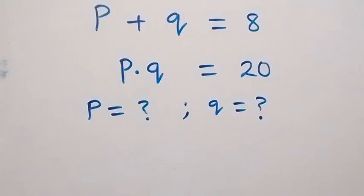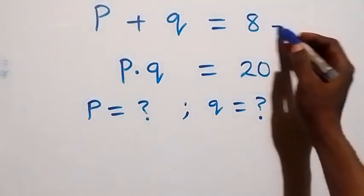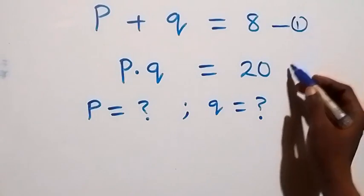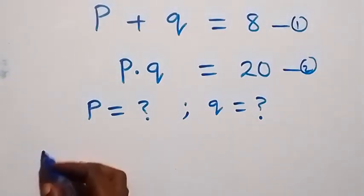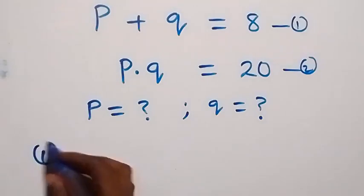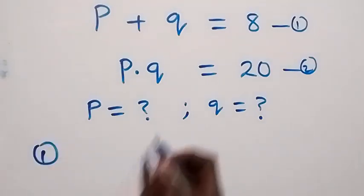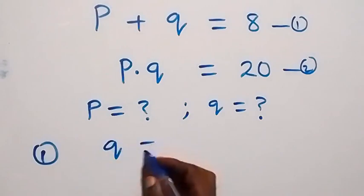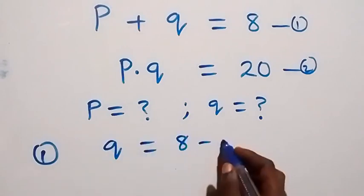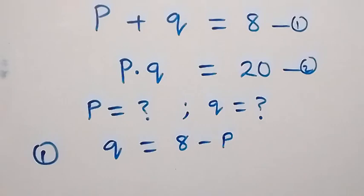Hello, welcome. We're going to solve for p and q in this system of equations. Let's label the first as equation 1 and the second as equation 2. From equation 1, we make q the subject, and that becomes q equals 8 minus p. We then substitute this back into equation 2.